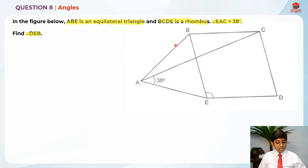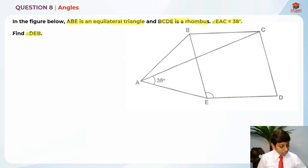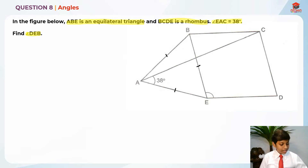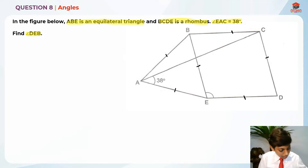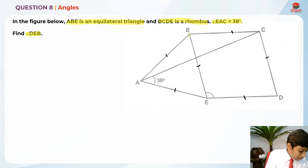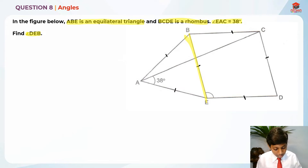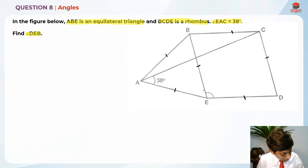Now let's analyze this figure. They're telling us that ABE is an equilateral triangle. For equilateral triangles, all the sides are the same length. And rhombuses also have all sides the same length. That means the side of the equilateral triangle is the same length as the rhombus, because the equilateral triangle fits exactly on the rhombus. Another property of the equilateral triangle is that all of its angles are 60 degrees — these are must-knows.